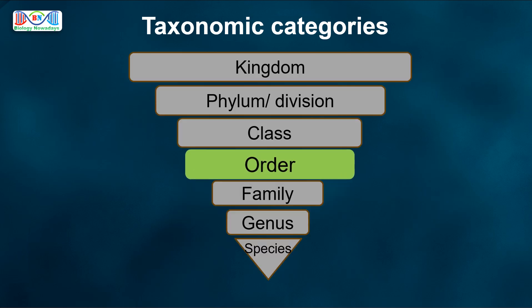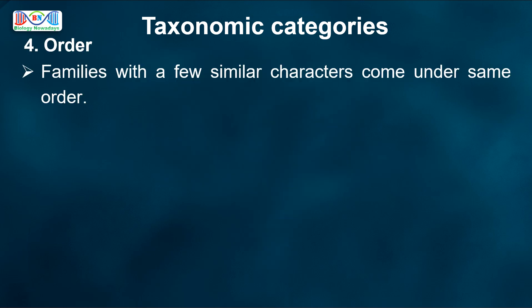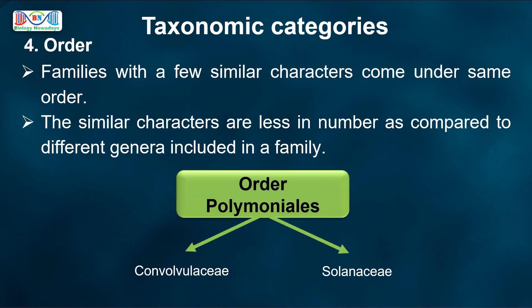Next higher category is Order. Families with a few similar characters come under the same order. The similar characters are fewer in number as compared to different genera included in a family. For example, plant families like Convolvulaceae and Solanaceae are included in the order Polemoniales, mainly based on the floral characters.